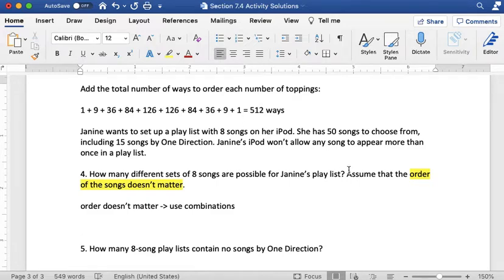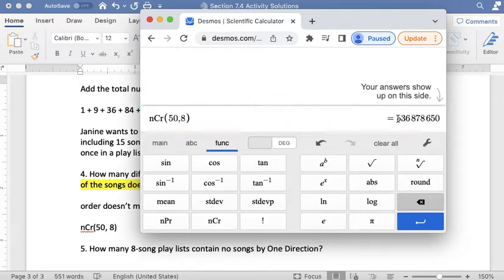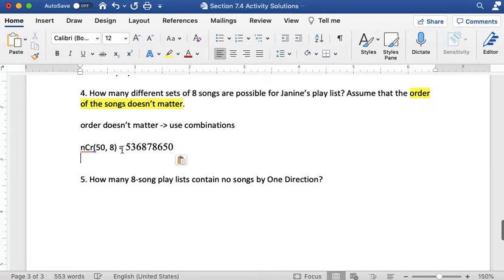So we have 50 songs to choose from, and we are choosing 8 songs. So that means I'm doing nCr 50 comma 8. I always use the bigger number first. If I don't have the bigger number first, it's going to give me an error message here. So 50, and I'm choosing 8 songs. This is a lot of ways to do this. So over 536 million possible different playlists. I'm going to paste that number in there. You can also screenshot your calculator output and put that in your activity if that's helpful to you.